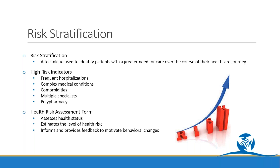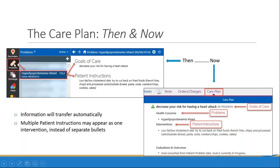Now let's take a look at the module itself. Some of you may already be working in the current care plan section located in the patient's problem list. Once the upgrade happens, all of your clinical information and documentation will come over into the new module. Here's an example of what that new module will look like. Instead of being in the problem section, it's now going to be its own tab — just like you have notes and orders and charges, you'll now have a care plan tab.